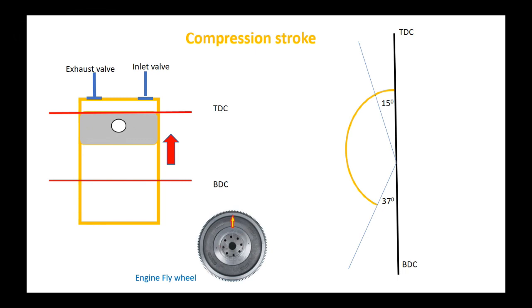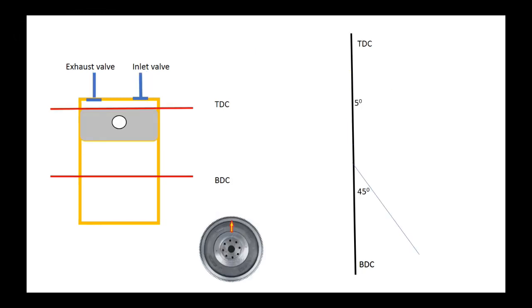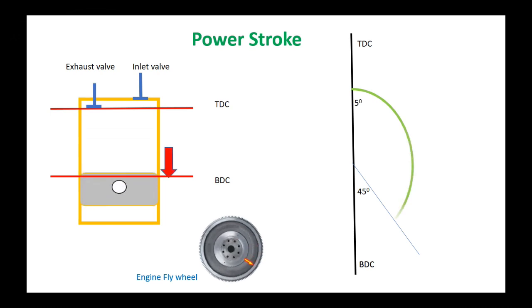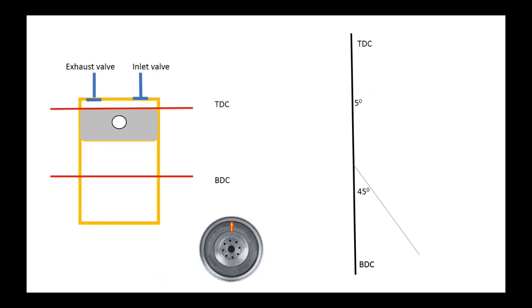Then see how to draw the diagram for power stroke. In this stroke also the valves are in closed position and the piston is moving from TDC to BDC. In the same time, the flywheel turns nearly half around. Before ending the stroke we can see the exhaust valve opens 45 degrees with the BDC position.